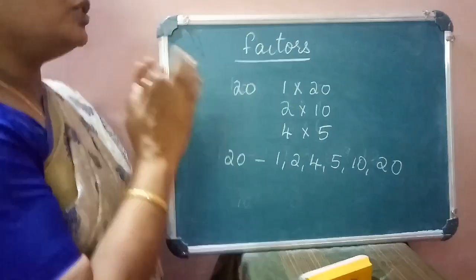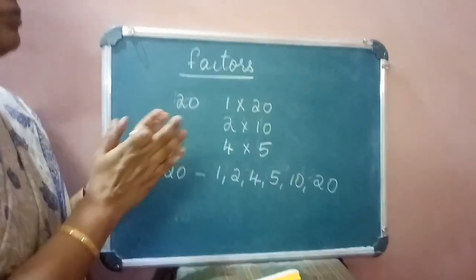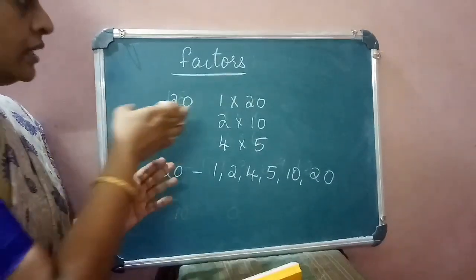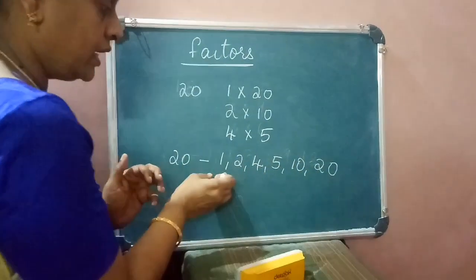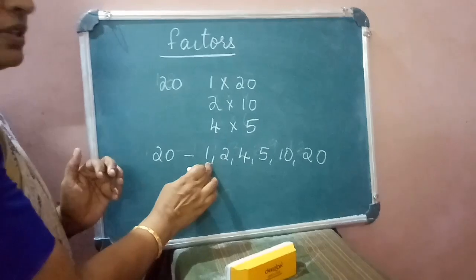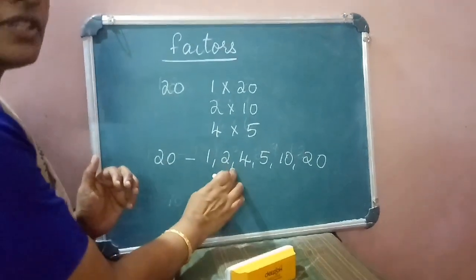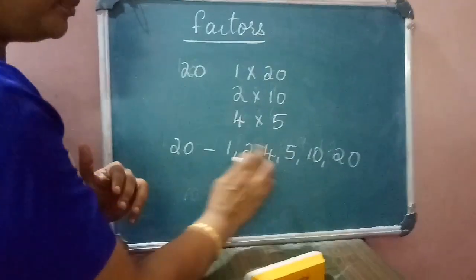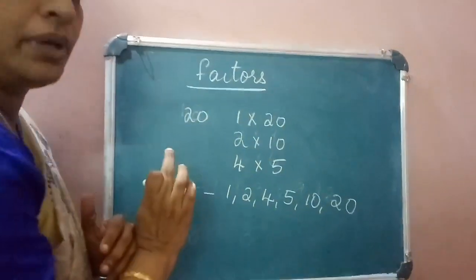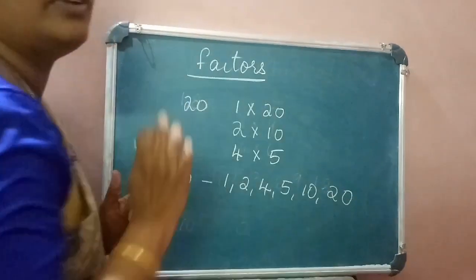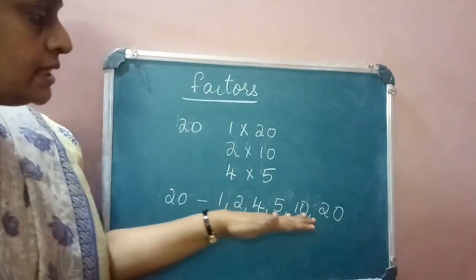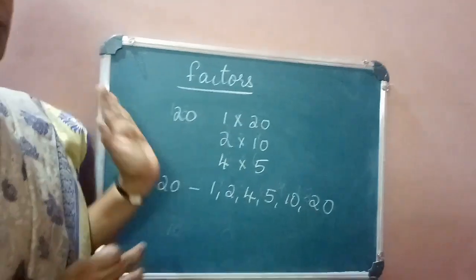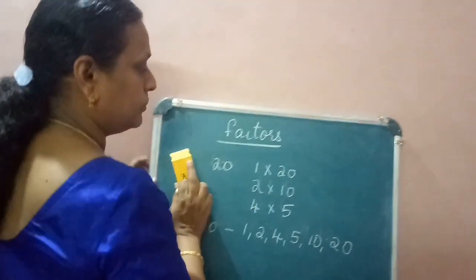To find the factors of a given number, you express it as a product of two numbers — those numbers are called factors. For each factor, the given number must be divisible by it: 20 is divisible by 1, 2, 4, 5, 10, and 20 — each of these divides 20 exactly.